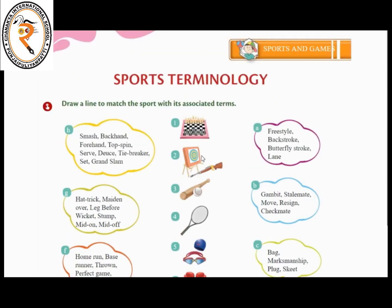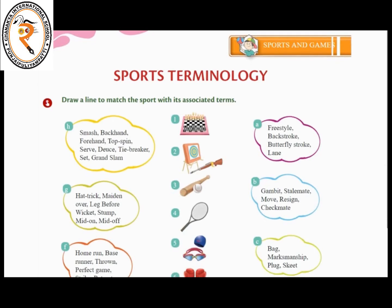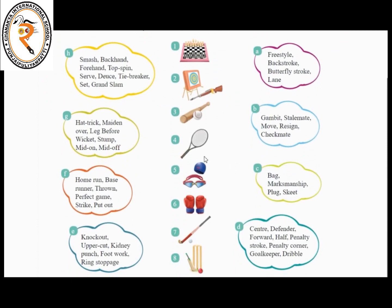The second picture shows a gun. Which terms will be suitable for the second one? Bag, marksmanship, plug, skeet — or center, defender, forward, half, penalty, stroke, penalty corner, goalkeeper, dribble? No, those won't suit. Bag, marksmanship, plug, and skeet will be suitable for the second game.